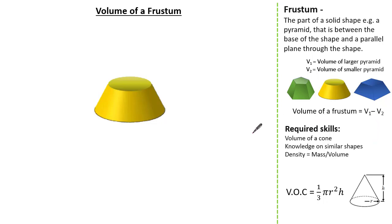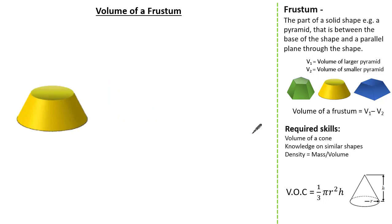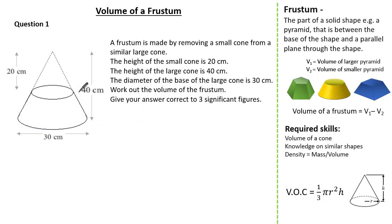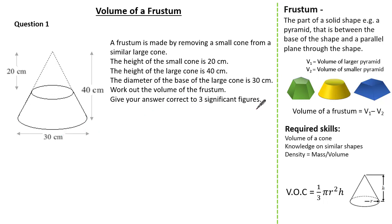So now we understand the formula, let's start by working out the volume of some frustums, starting with a cone and applying it to a past exam question. Here we are given a frustum made by removing a small cone from a larger cone. The height of the small cone is 20 cm and the height of the larger cone is 40 cm. We know the diameter of the base of the large cone is 30 cm, and we are asked to work out the volume of the frustum giving our answer to three significant figures.